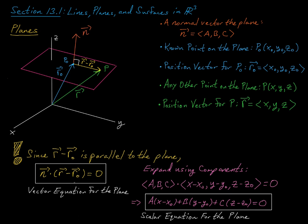If we expand this using components, n in component form is a, b, c, and r minus r0 gives x minus x0, y minus y0, z minus z0. Expanding the dot product gives a times (x minus x0), plus b times (y minus y0), plus c times (z minus z0), equal to 0. Since these are all scalar quantities, we call this a scalar equation for the plane.